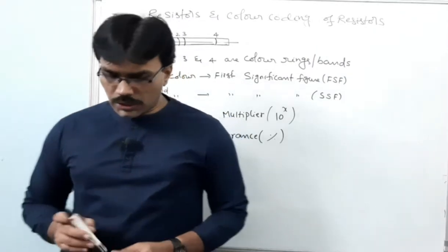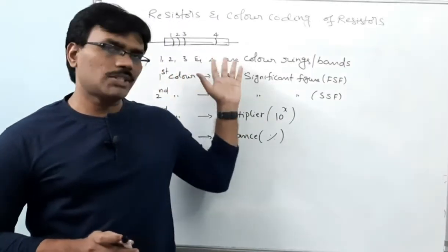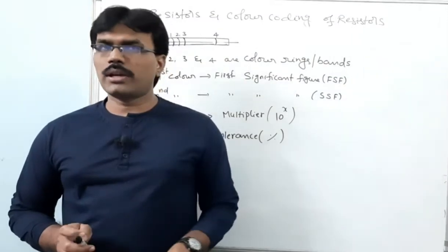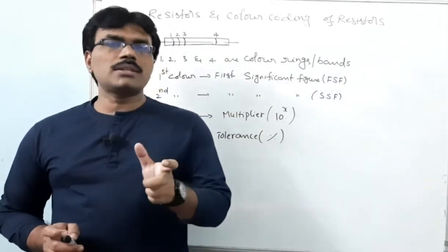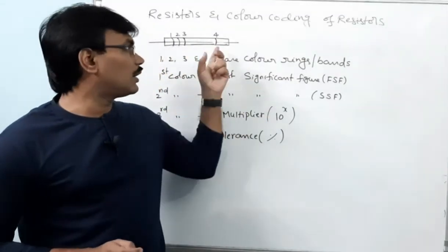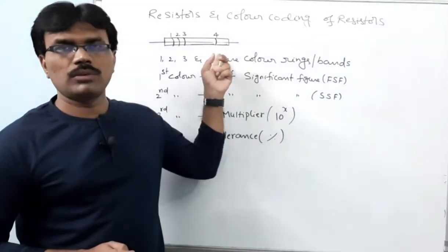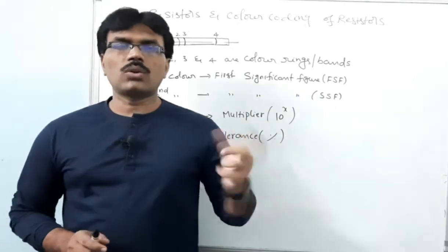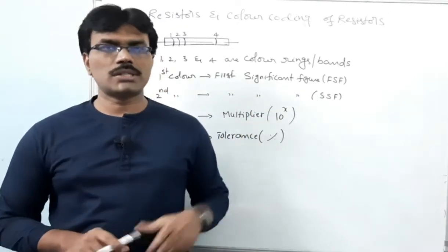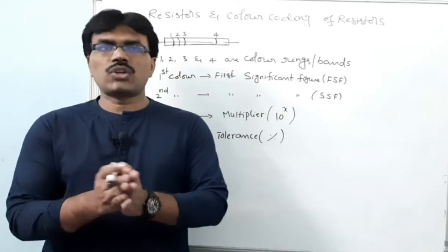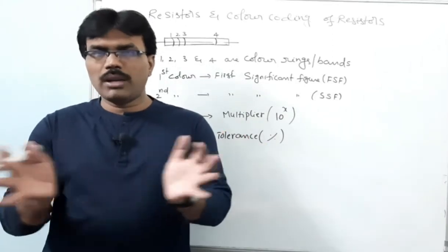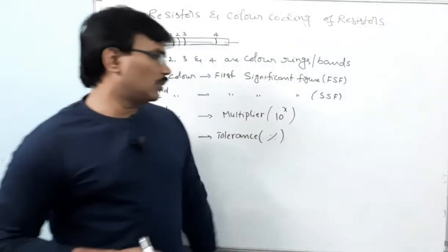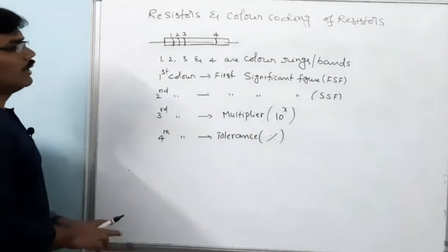The tolerance means the maximum percentage difference between the actual required value and the present given value. It's not that the resistor maintains the exact value as per color coding — there will be some variation. The resistance value will fall within a maximum and minimum range. The fourth color tells us what that maximum variation is. I will give you a question shortly and it will become more clear.